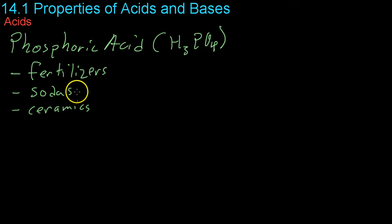Phosphoric acid which is hydrogen paired with a phosphate group is commonly used in fertilizers and animal feed as well as in soda for that sort of tart sour taste you get along with the bubbles and it's also used in producing ceramics.